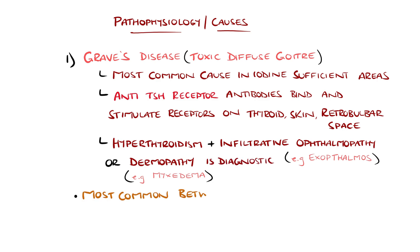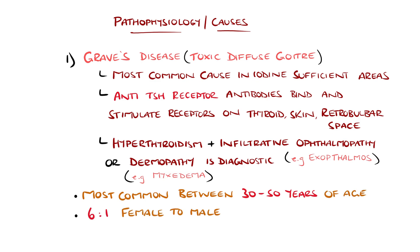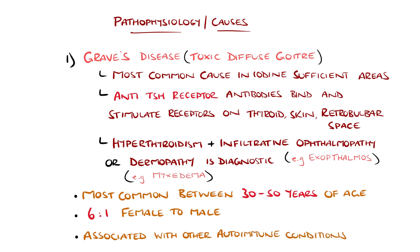Graves' disease is most common between the ages of 30 and 50, and is six times more common in females than in males. This may be because of its autoimmune nature, and it also tends to be associated with other autoimmune conditions like type 1 diabetes and Addison's disease.